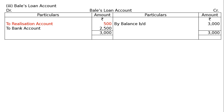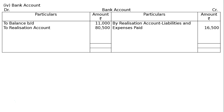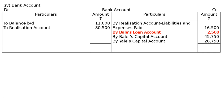The fourth account is the Bank Account. We write To Balance Brought Down Rs. 11,000 and To Realization Account Rs. 80,500. On the credit side: By Realization Account for liabilities and expenses paid Rs. 16,500; By Bale's Loan Account Rs. 2,500; By Bale's Capital Account Rs. 45,750; By Yale's Capital Account Rs. 26,750. The totaling is Rs. 91,500 on both debit and credit sides. This is the final answer. Thank you.